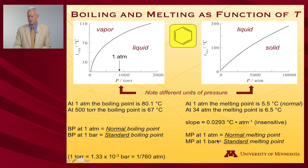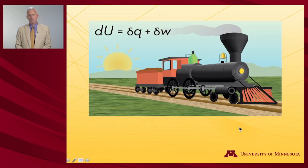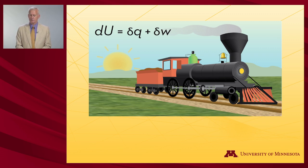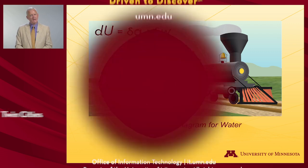The same nomenclature applies to melting: the melting point at 1 atmosphere is the normal melting point, and at 1 bar it is the standard melting point. That completes our discussion of phase diagrams and their interpretation, including pressure and temperature dependence. In the next video, we'll focus on a particularly important substance and its phase diagram — namely, water.